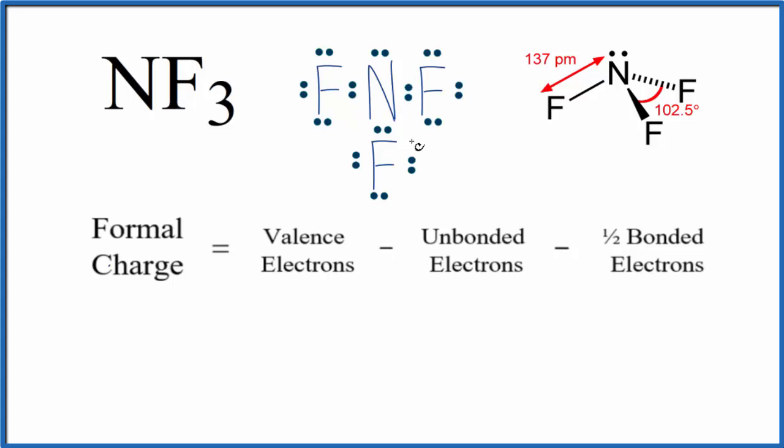Let's look at the nitrogen first. We have a formula here, and first we'll look at the valence electrons. We can look on the periodic table and see that nitrogen's in group 15, sometimes called 5A. It has five valence electrons.